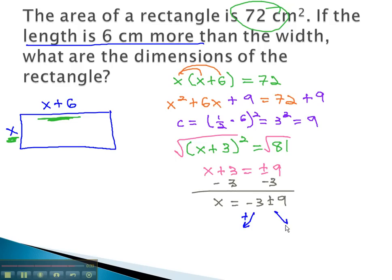We could do the plus or the minus to find out x is equal to 6 or negative 12. Of course, we can't have a negative measurement on our rectangle, so we get x equals 6. This is our width. The length is 6 plus 6, or 12. We have a 6 centimeter by 12 centimeter rectangle.